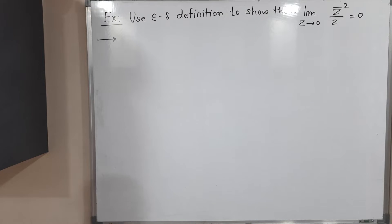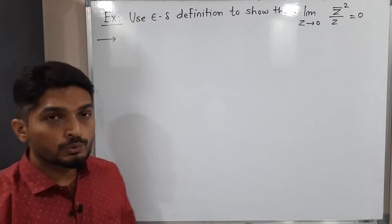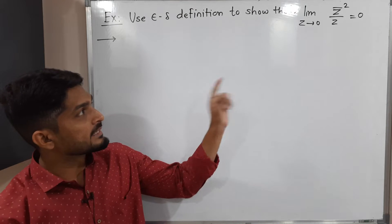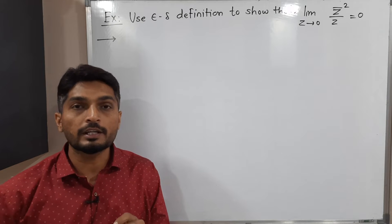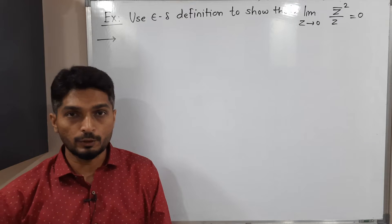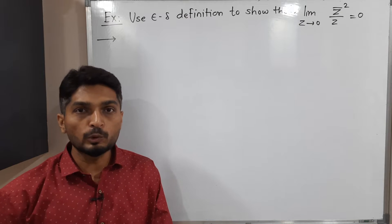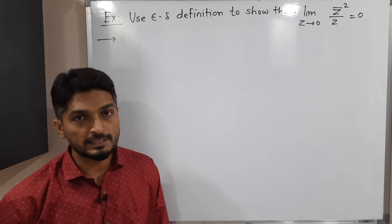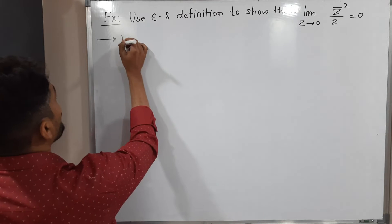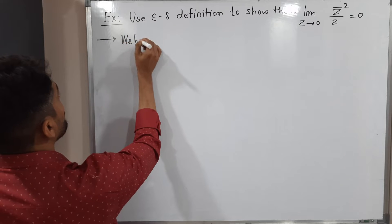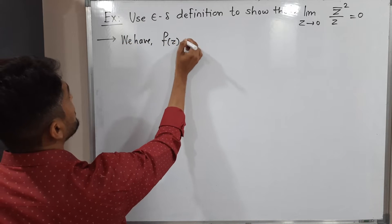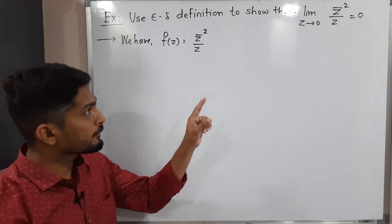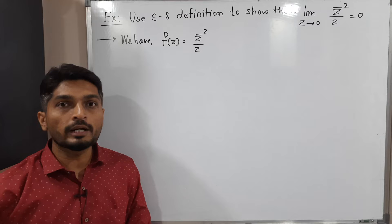Hello everyone. In this video we are going to discuss this example using the epsilon-delta definition of limit. We have to prove that the limit as z tends to 0 of z-bar squared divided by z is equal to 0.